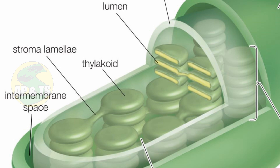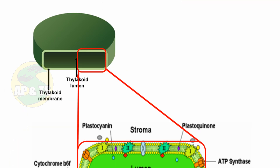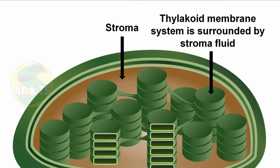Grana are interconnected by tube-like structures called stroma lamellae. The photochemical phase of photosynthesis, that is, the light-dependent reactions, occur in the membranes of grana — this is the site of the photochemical phase. The space between the grana is filled with a colourless fluid called stroma.